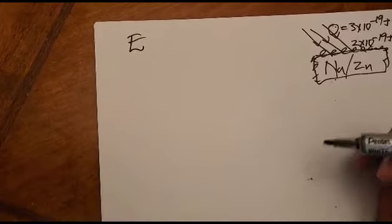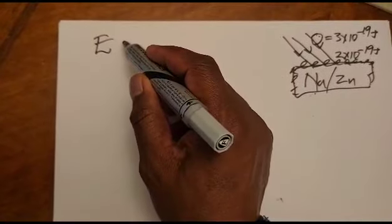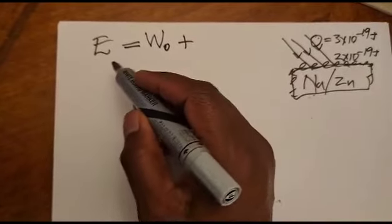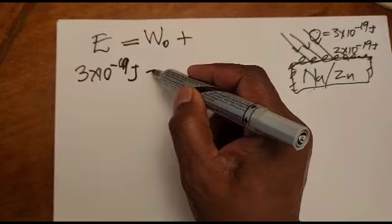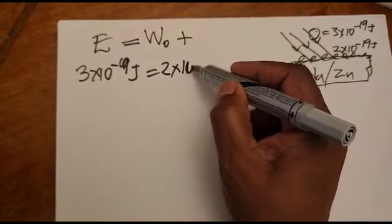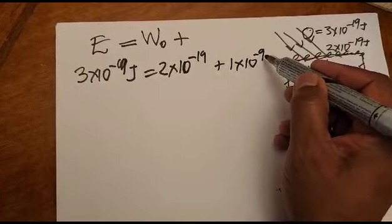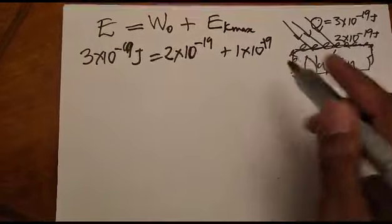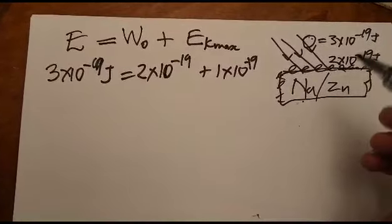By the principle of conservation of energy, energy is neither destroyed nor created but changes form. The remaining energy — since the photon has 3 × 10⁻¹⁹ J and the work function absorbs 2 × 10⁻¹⁹ J — means the remaining 1 × 10⁻¹⁹ J is converted into kinetic energy, enabling the electron to move.